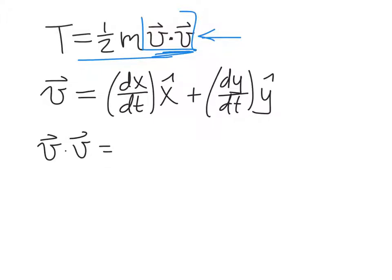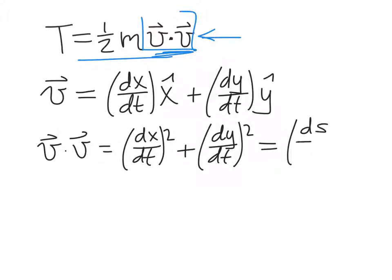If we dot the velocity into itself, you can see that we're going to get dx/dt squared plus dy/dt squared. We already showed that's going to be equal to ds/dt squared. Therefore, the kinetic energy can be written as T = 1/2 m ṡ².